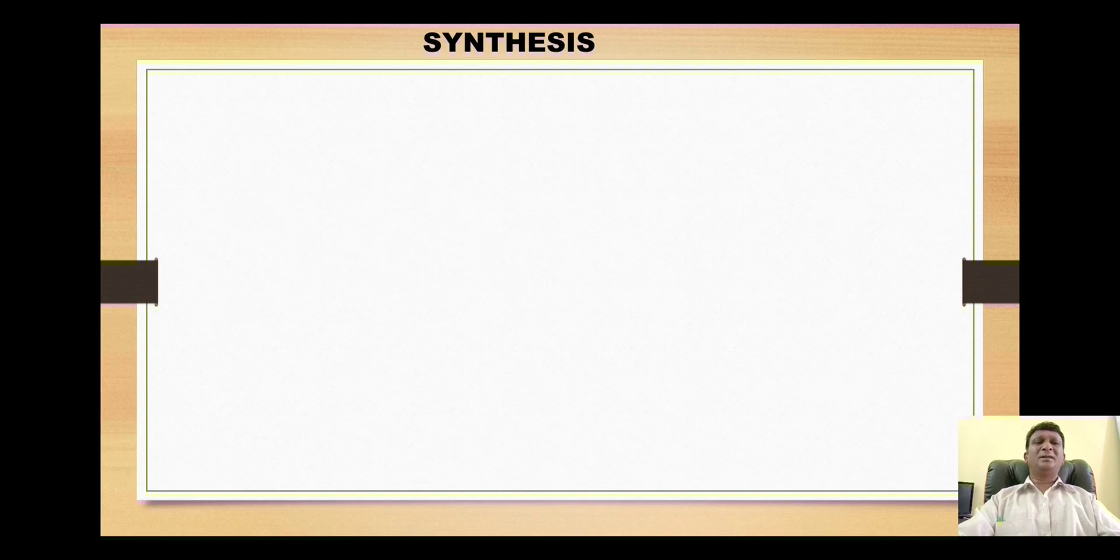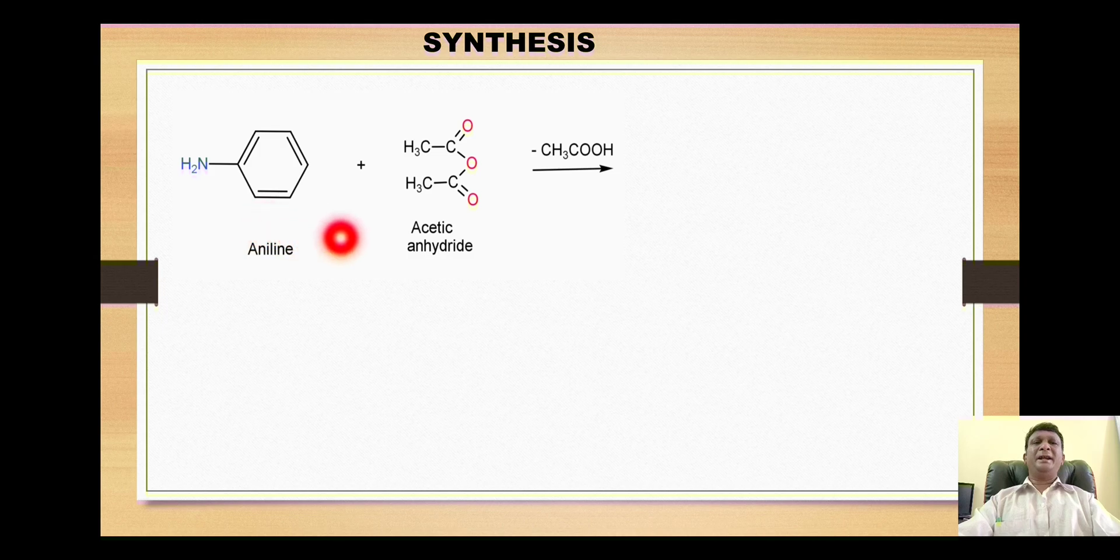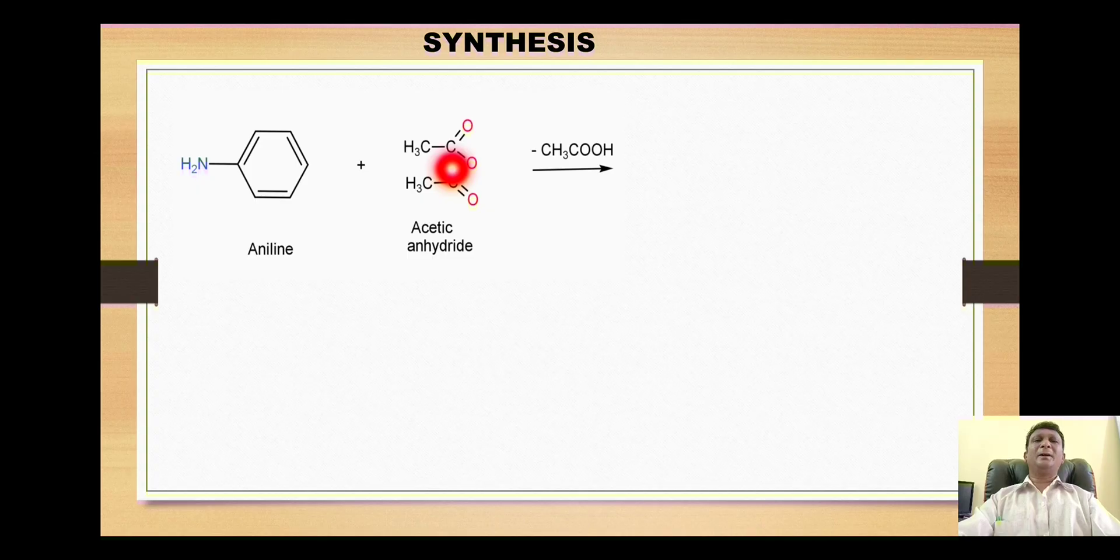Now move on to the synthesis of this compound, which is the very important part. The synthesis starts with the reaction between aniline and acetic anhydride. The amino group of aniline attacks one of the acetyl groups.